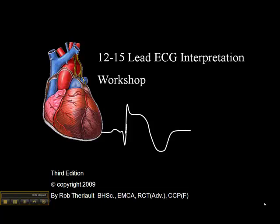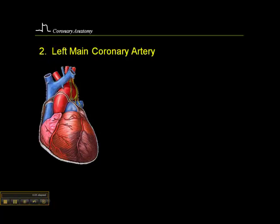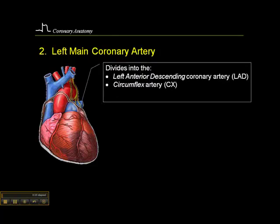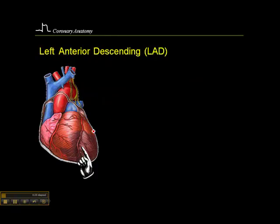Finally, I want to talk about the left main coronary artery, the LAD, and the circumflex artery. The left main coronary artery is a very short vessel. We don't see it here, but it very rapidly bifurcates into the left anterior descending coronary artery, or the LAD, and the circumflex artery, which travels along the AV sulcus on the left-hand side.